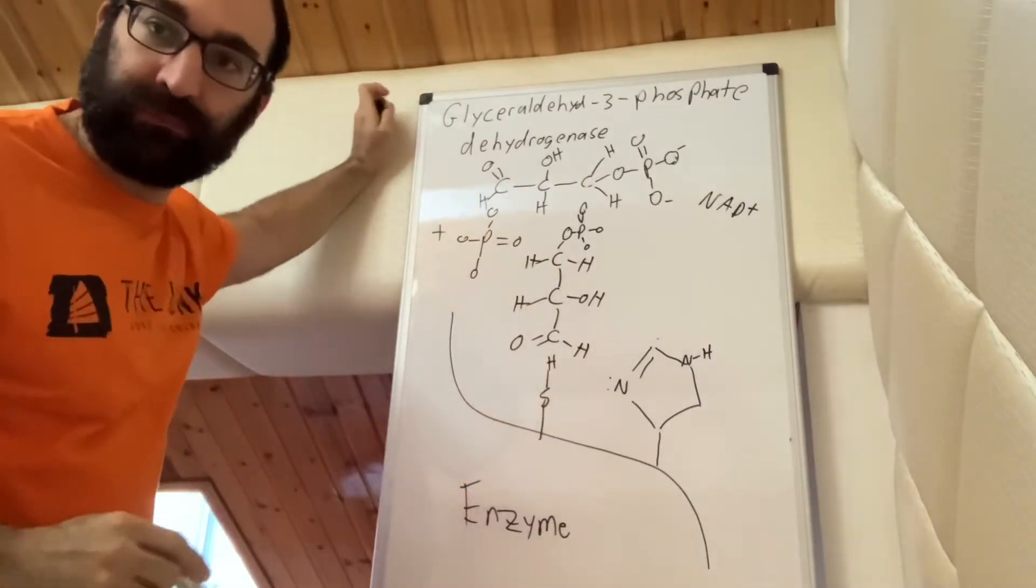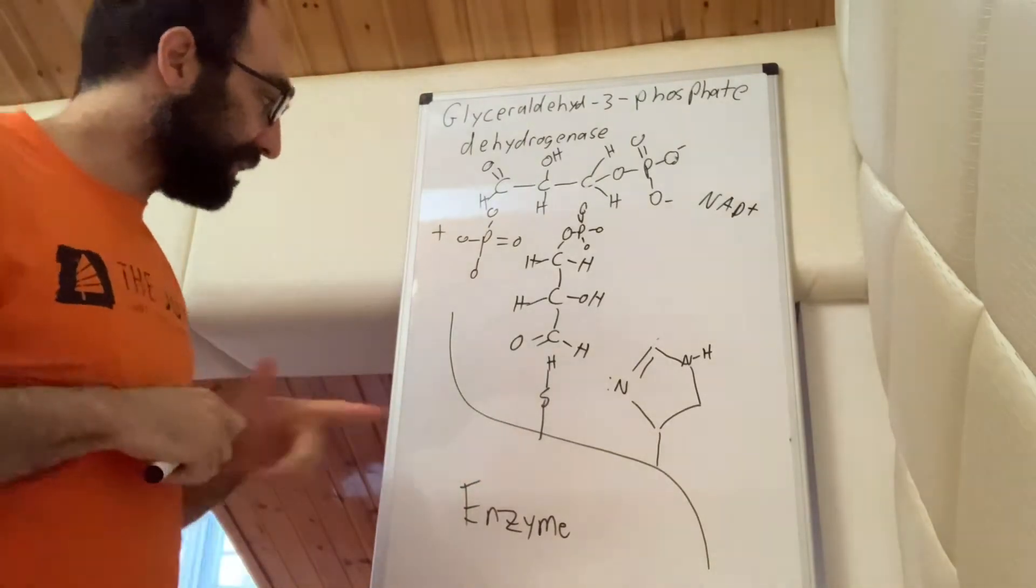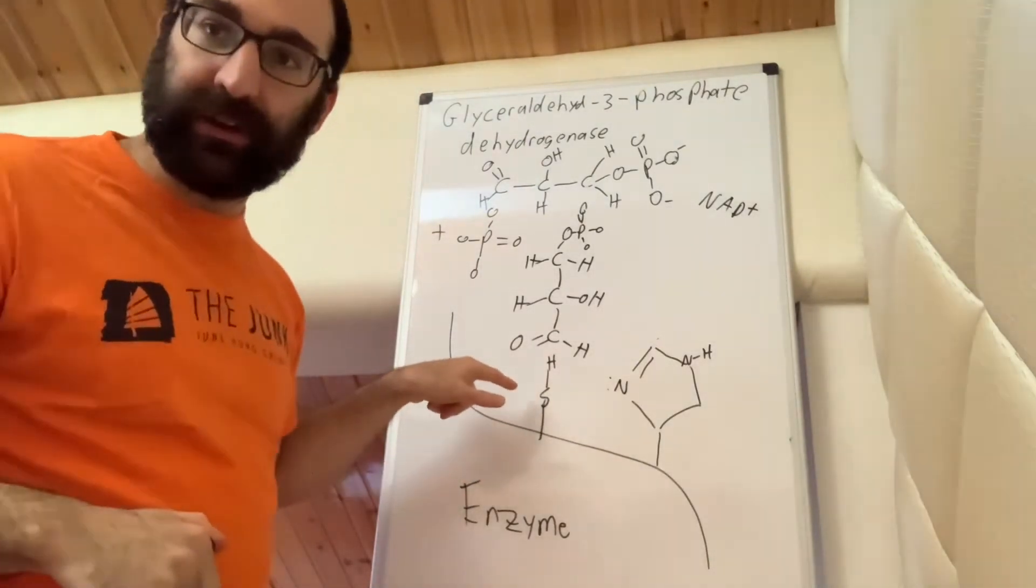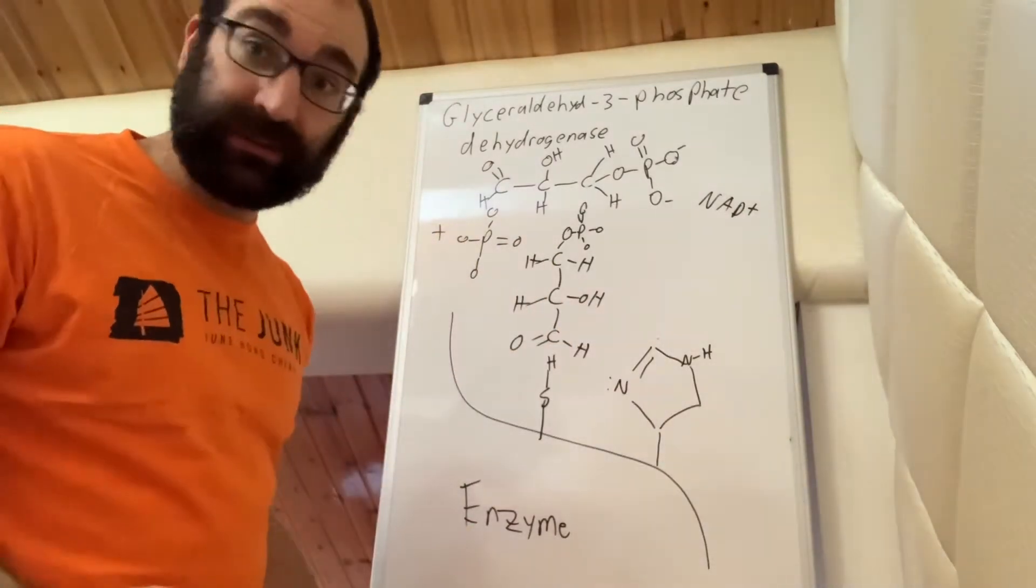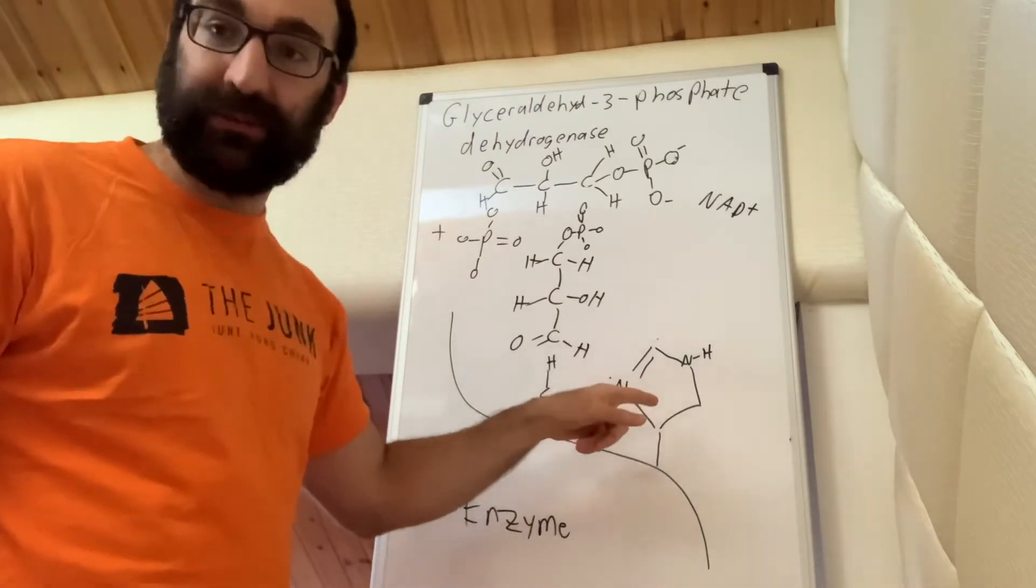So what happens here, this is cysteine. Cysteine has this sulfur group right here and it's a weak acid. This hydrogen can kind of fall off, and right next to it, and this is why this works, is we have a histidine residue.